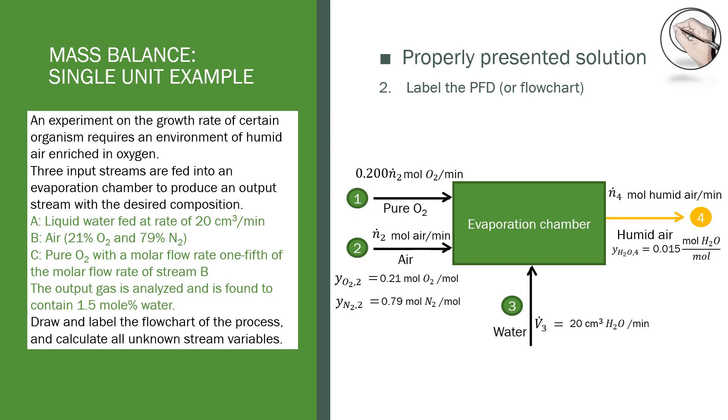Please note the flow rate notation. In general, m, n, and v are used for mass, moles, and volume respectively. Placing a dot above these letters represents a flow rate. In this case, stream 2 is written as a molar flow rate and stream 3 is a volumetric flow rate.